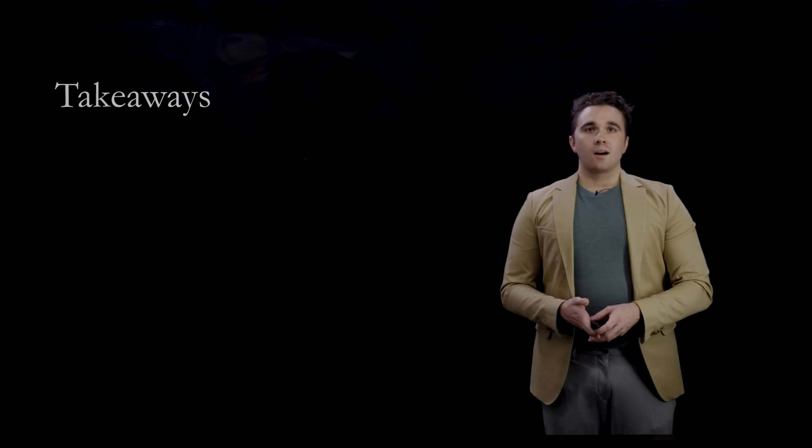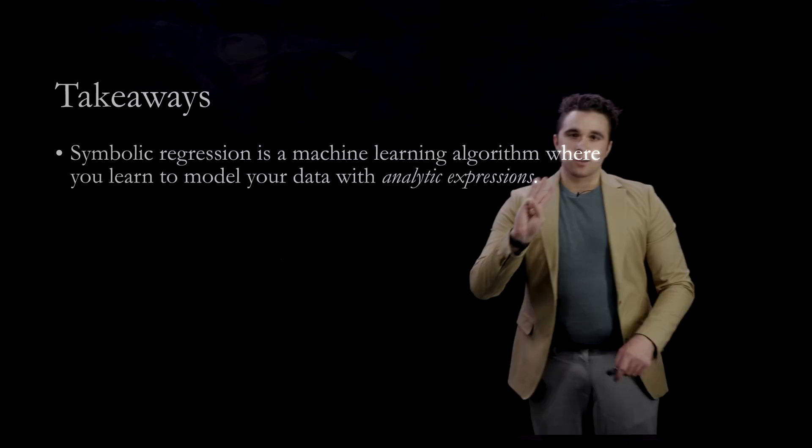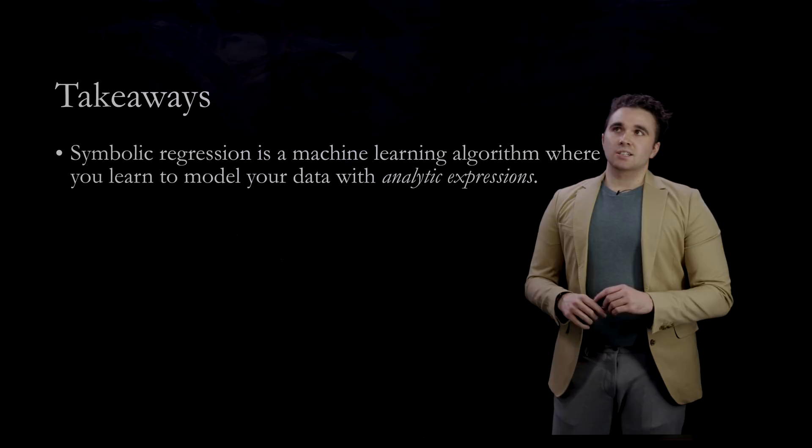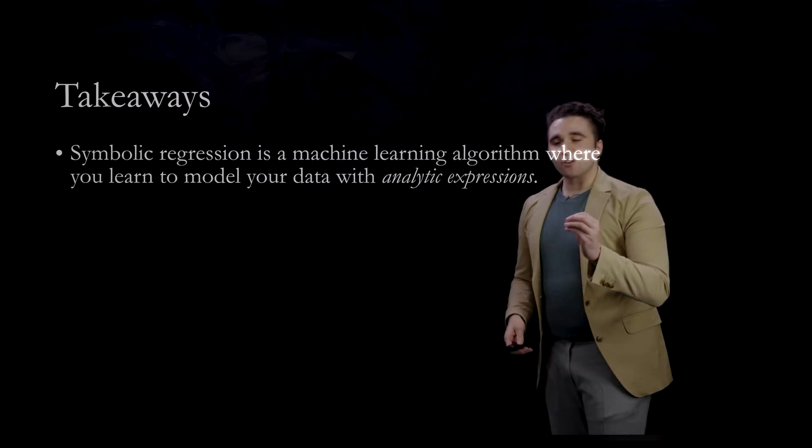Let me start with the key points I want you to remember. The first is symbolic regression — it's an underused machine learning model, but it's very interpretable and very good at doing physics problems.